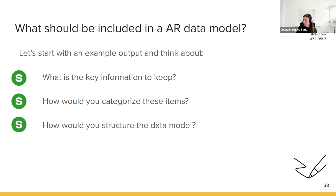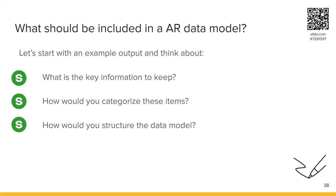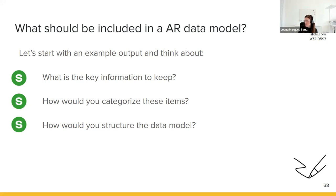I want you to look at this simple Kaplan-Meier plot and think about three questions — they're also appearing as polls in Slido: if you want to reproduce that Kaplan-Meier plot and you're creating an analysis results data model, what information do you need to keep to be able to reproduce it? How would you categorize that information? And how would you actually structure the data model? Take a bit of time to think about this before we move to the actual exercise in the cloud.